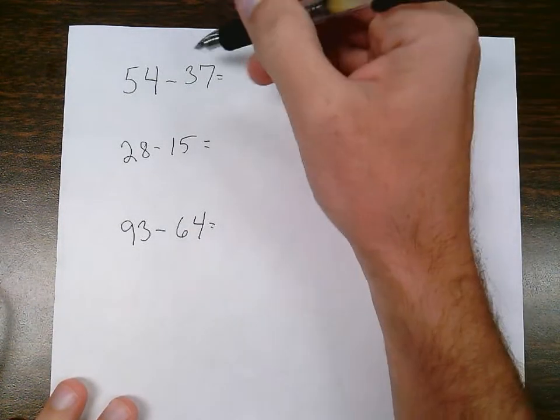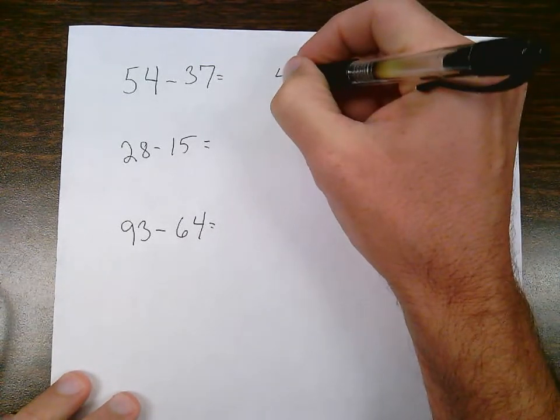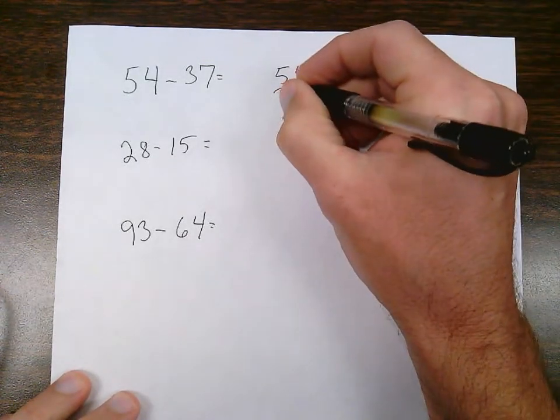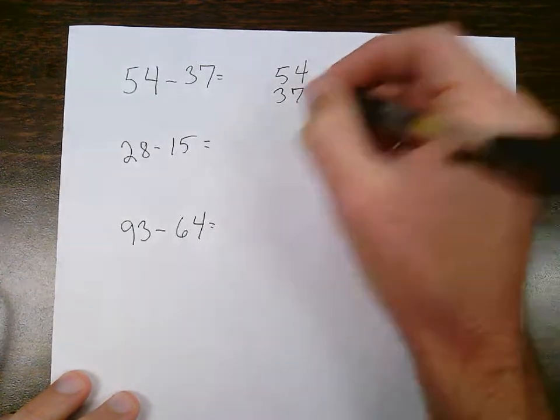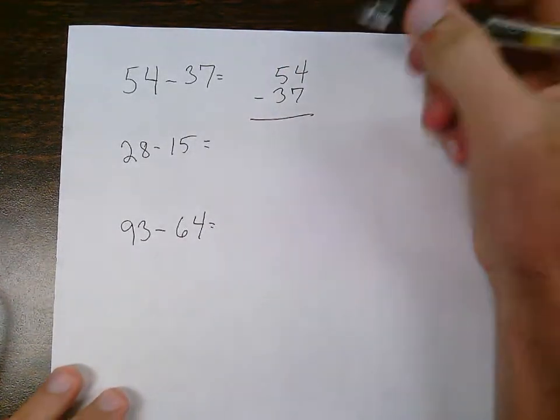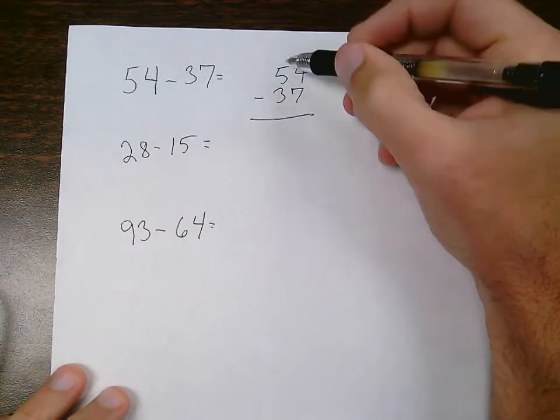So I have 54 minus 37. Whenever I put them vertically, I want to make sure that my place values are lined up nice and neat. Ones column with a ones column, tens column with a tens column.